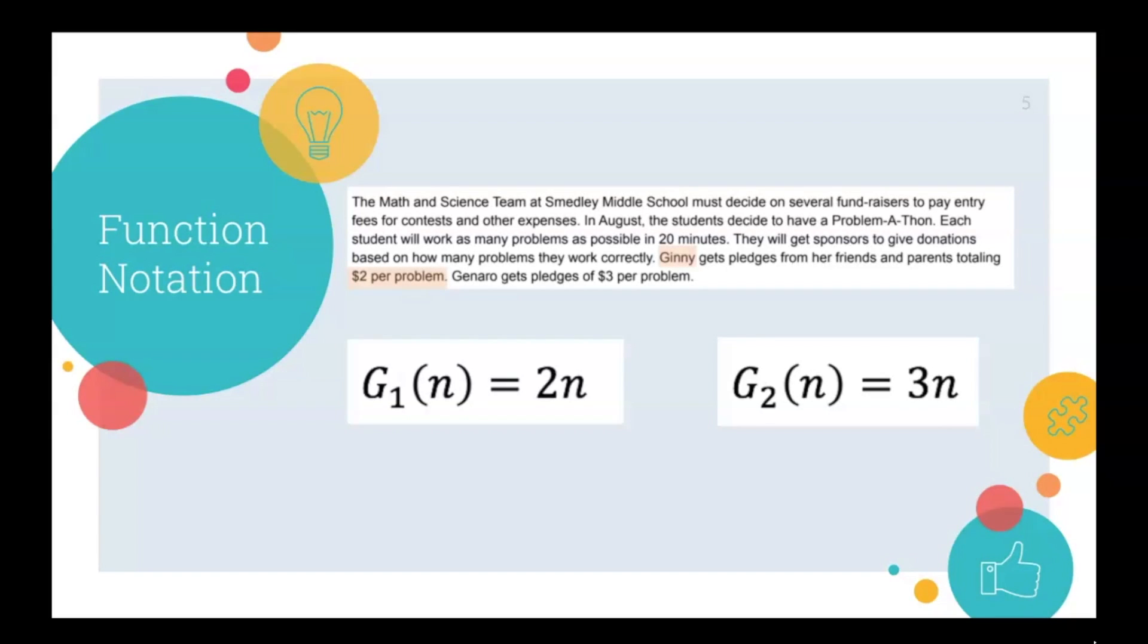So Jenny will earn two dollars per problem. Looking at how her rule could be written using function notation, we're going to refer to her as G1. So Jenny's earnings are a function of the number of problems worked and that is equal to two dollars per problem.